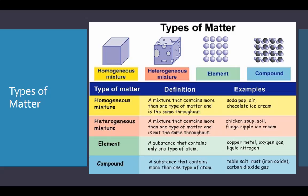Soda pop or air can serve as examples of homogeneous mixtures, though they may not be perfectly homogenous. Heterogeneous means they're not evenly mixed and contain lots of different types of matter. Chicken soup is a great example. Soil and fudge ripple ice cream are also heterogeneous. Element and compound are very specific — I really want you to pay extra attention to these because for what we're doing, that's important.